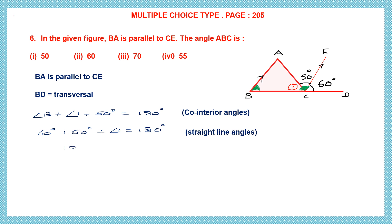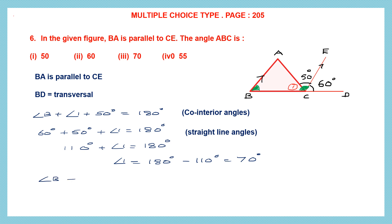From this, we can find angle 1. So 110 degrees plus angle 1 equals 180 degrees. Therefore angle 1 equals 180 minus 110, which is 70 degrees. So angle 1 is 70 degrees. Now from this, we can find angle B.